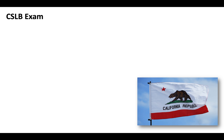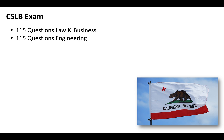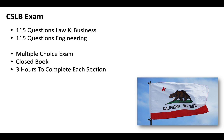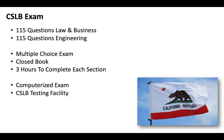Essentially, you've got to pass two exams — 115 questions covering law and business and 115 questions covering engineering. It's going to be multiple choice, closed book. You'll get three hours to complete each section. It's going to be computerized and you'll take it at a CSLB testing facility. If you're applying from out of state, just know that you will need to come to California to actually take the exam.